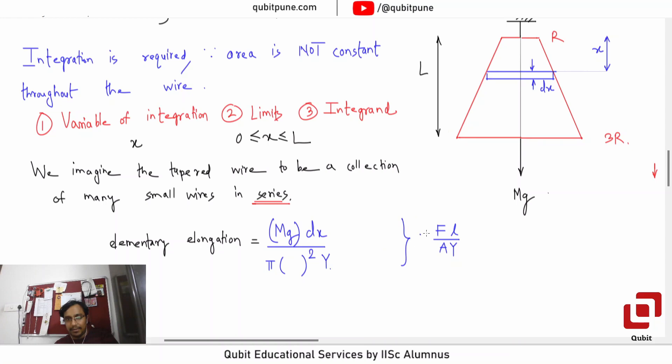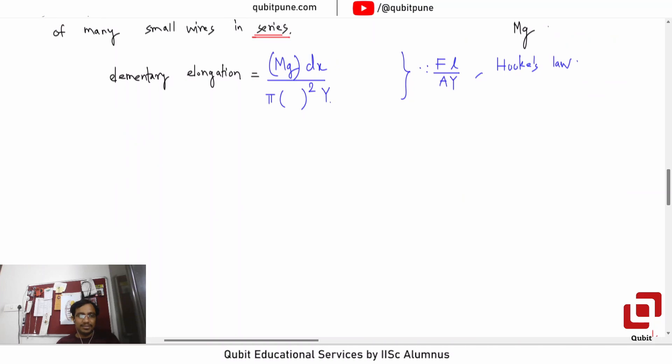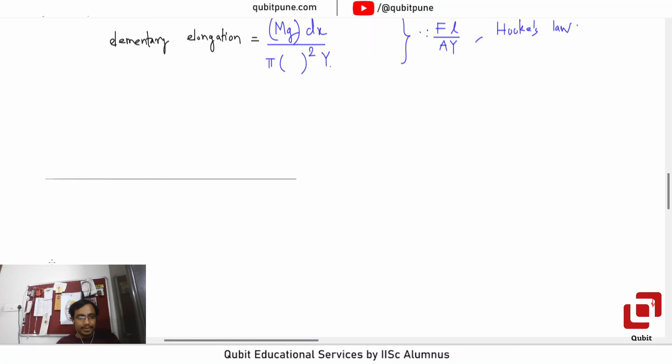Now, if you don't understand how we can calculate radius at any arbitrary distance x, I would like you to visualize a situation from geometry. Consider this as our X axis, and let there be a line. Let me first draw the Y axis. Suppose this is our Y axis, and suppose I pick a point here, and suppose this is a line that I take.